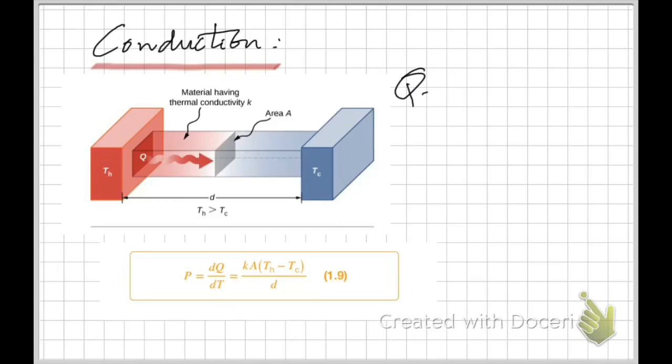There are three processes in which heat can be transferred from one point to another. The first one we're going to look at is conduction. The three processes are conduction, convection, and radiation.